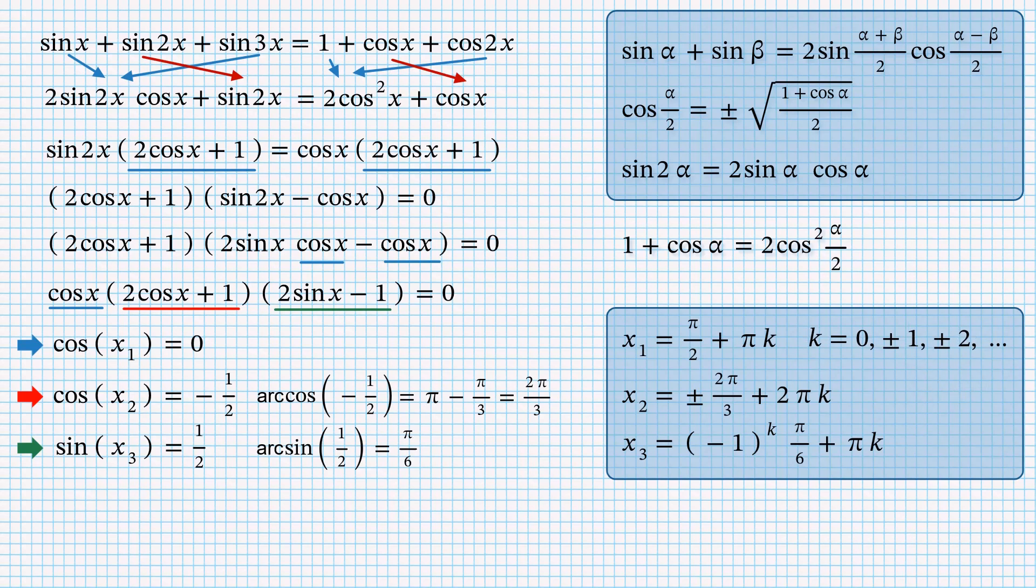For someone who may find the last expression a bit confusing, we can split the last set into two: pi over 6 plus 2 times pi k and 5 pi over 6 plus 2 times pi k. This is the end.